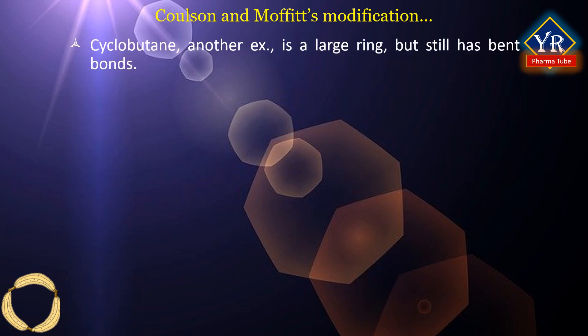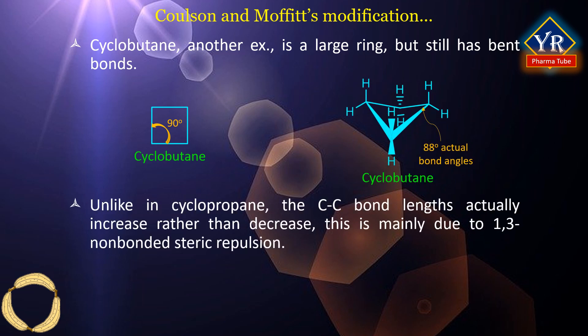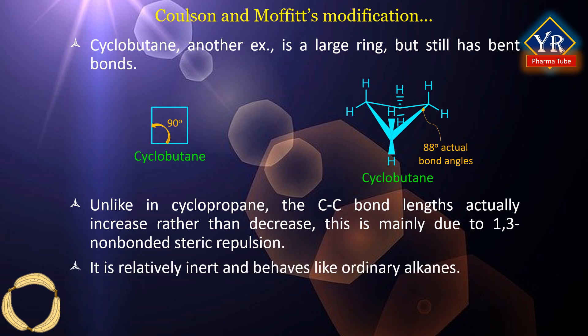Another example: cyclobutane is a larger ring compared to cyclopropane but still has bent bonds. In this molecule, the carbon bond angles are 90 degrees for the planar conformation and 88 degrees for the puckered one. Unlike in cyclopropane, the carbon-carbon bond lengths actually increase rather than decrease. This is mainly due to 1-3 non-bonded steric repulsion. In terms of reactivity, cyclobutane is relatively inert and behaves like ordinary alkanes.